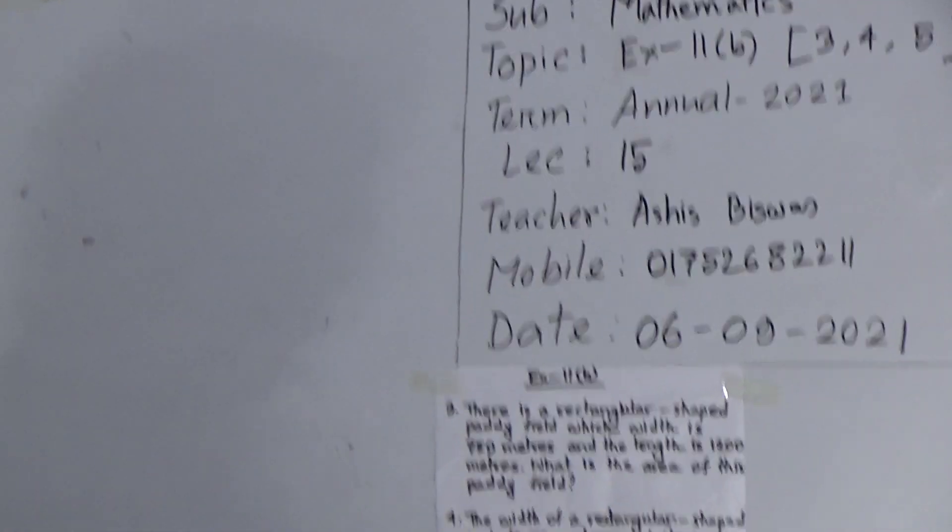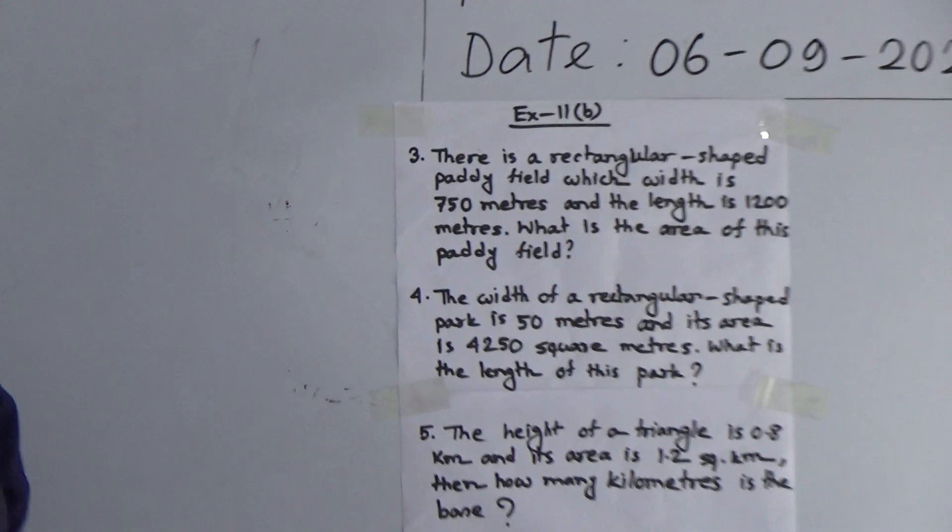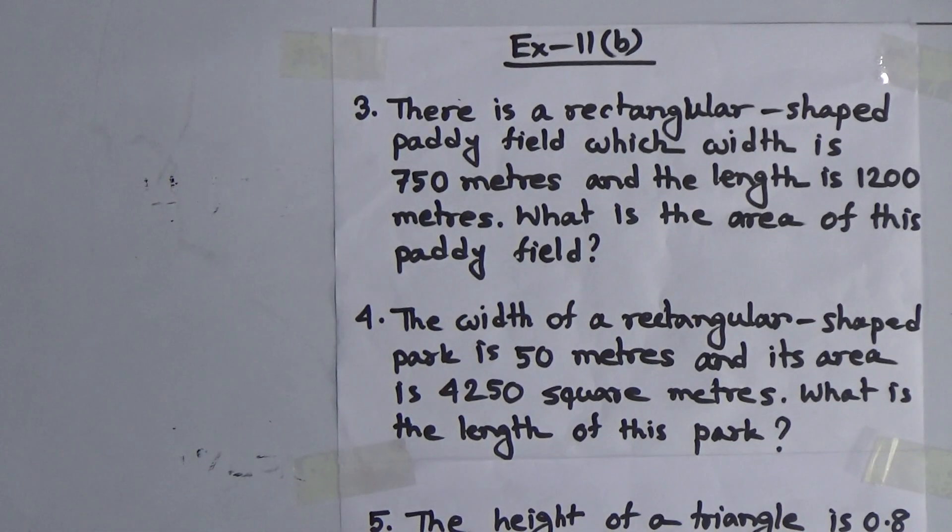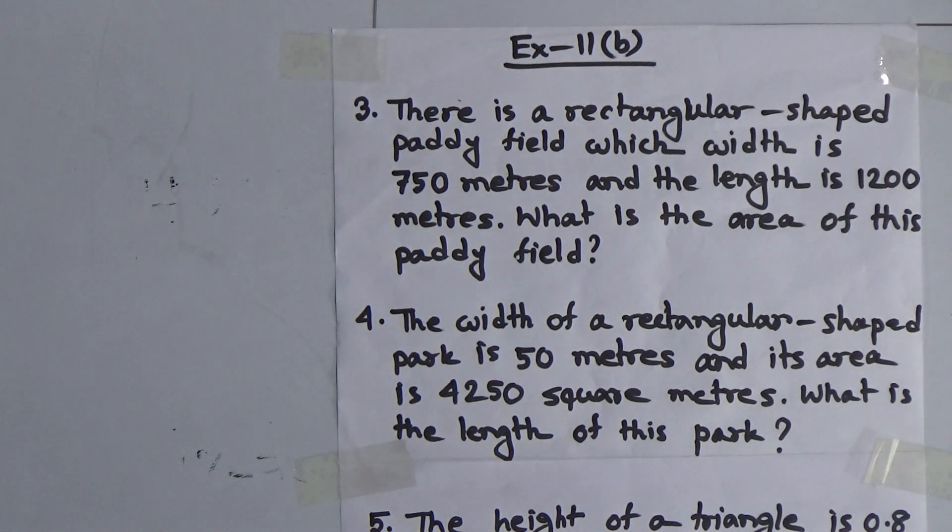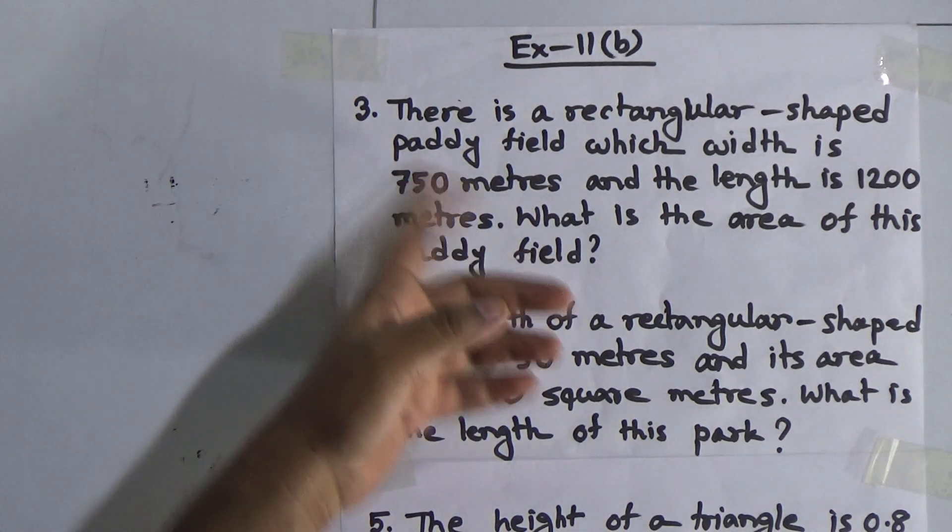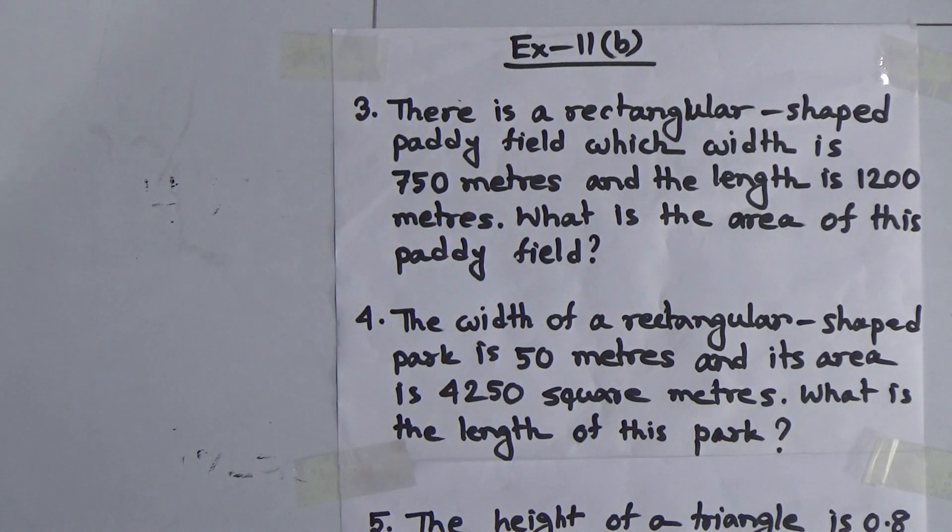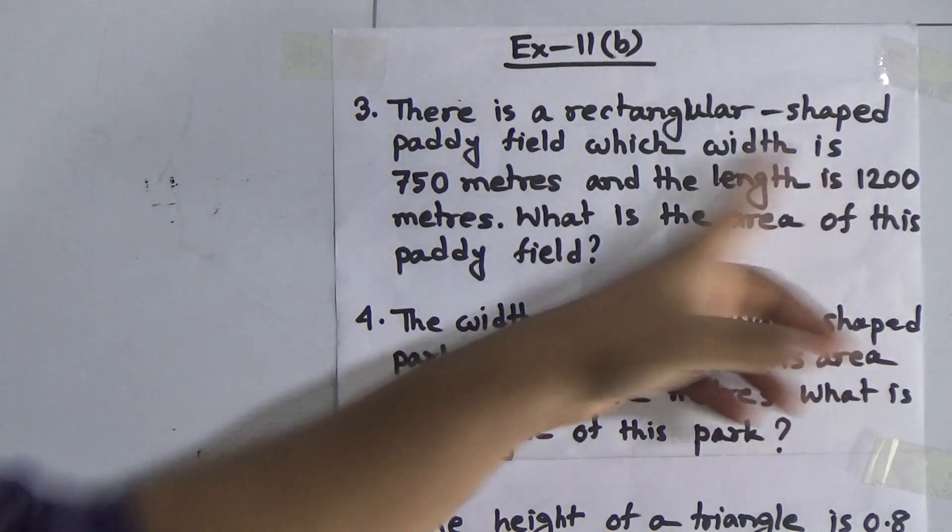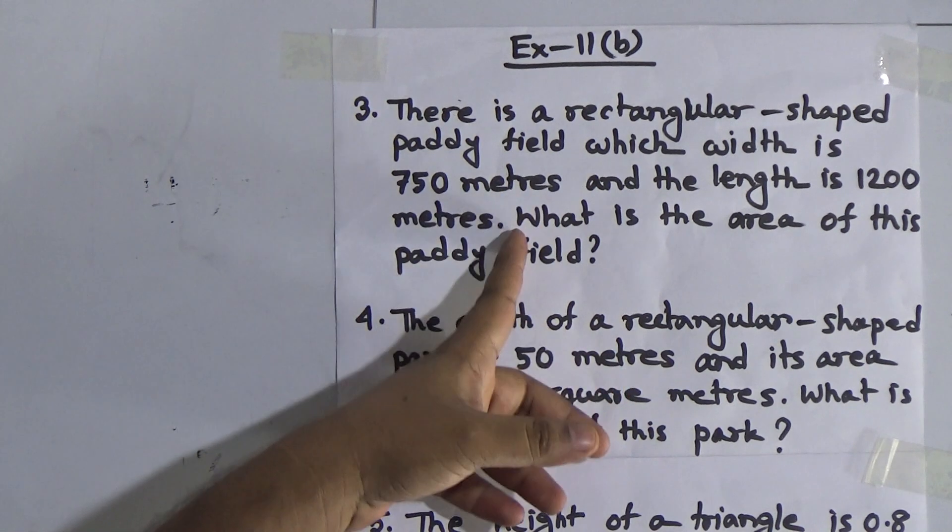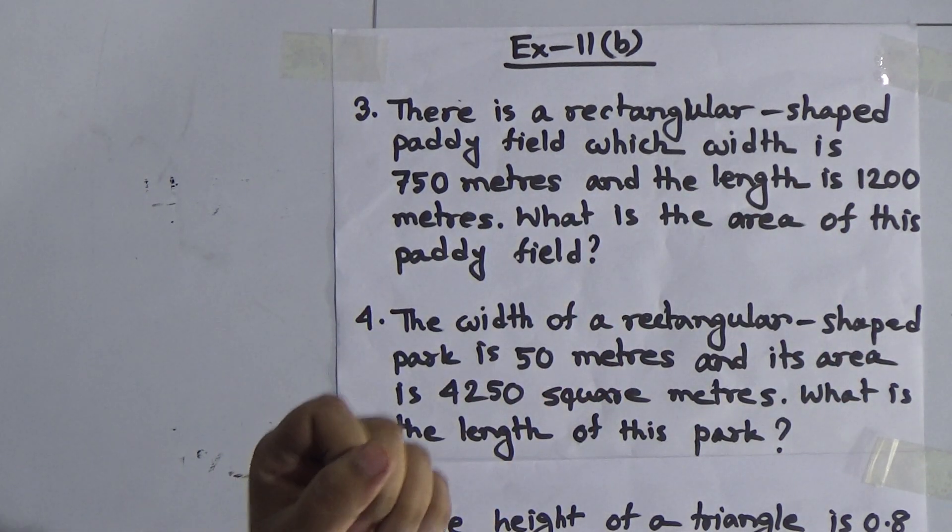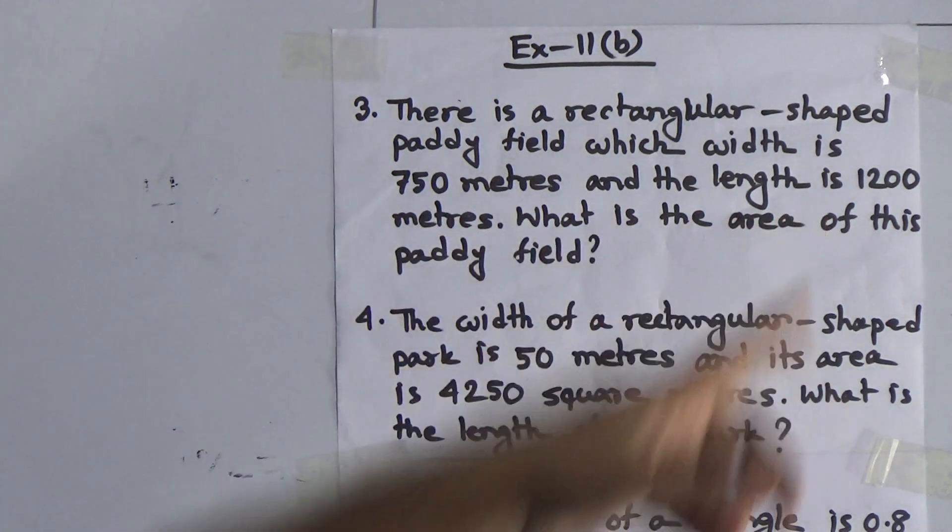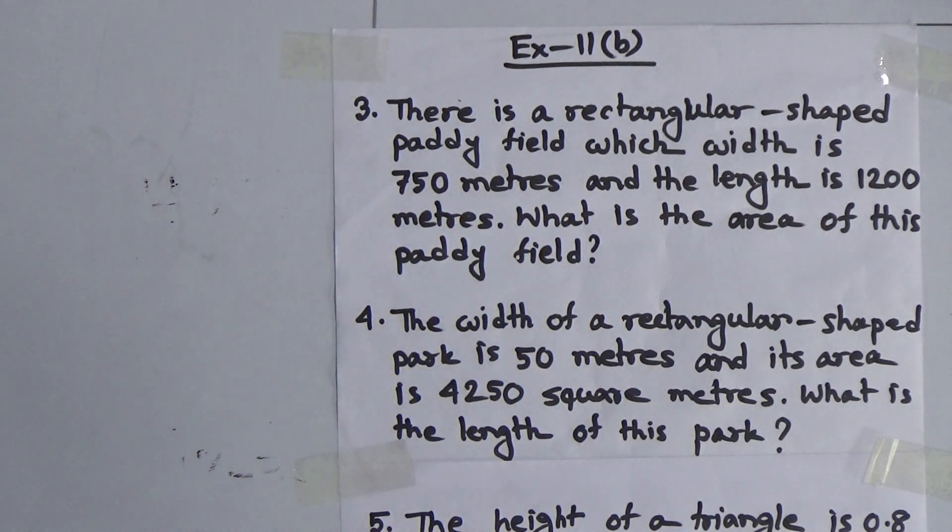I have already written the question on the board. So in order to solve this math, at first we need to read the question. After that we make a plan. And after making plan, then we shall solve these problems. Question number 3: There is a rectangular-shaped paddy field whose width is 750 meters and the length is 1200 meters. What is the area of this paddy field?